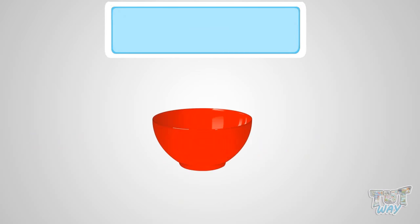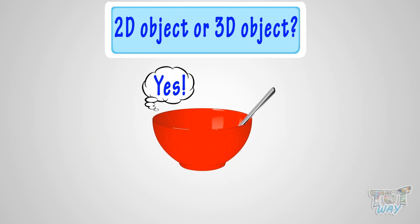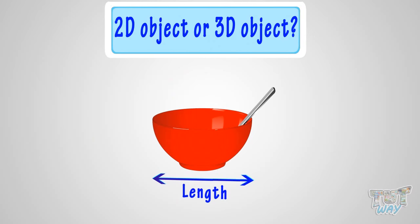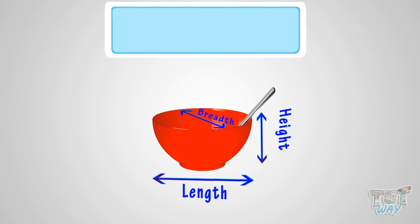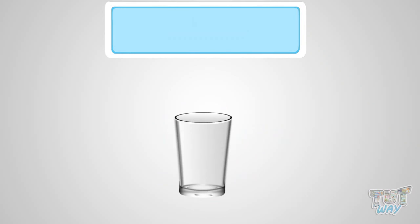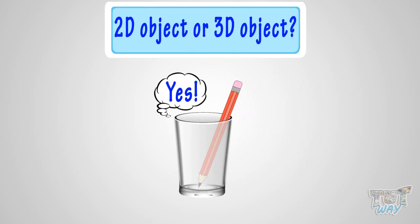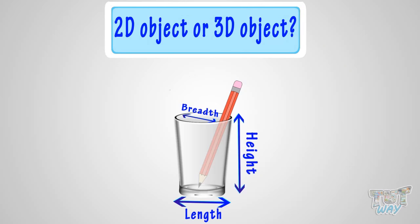Here we have another object. We have to tell: is it a 2D object or a 3D object? Can we put something in this object? Yes. And how many dimensions does it have? It has length, breadth, and height too. So it's a 3D object.